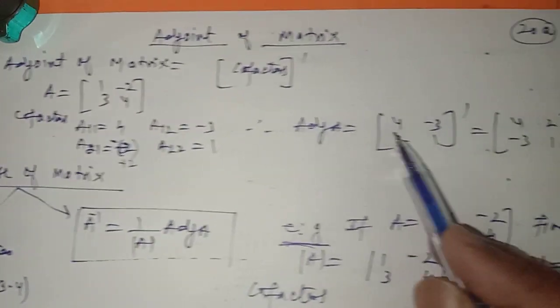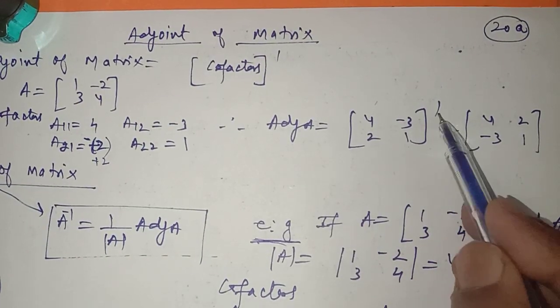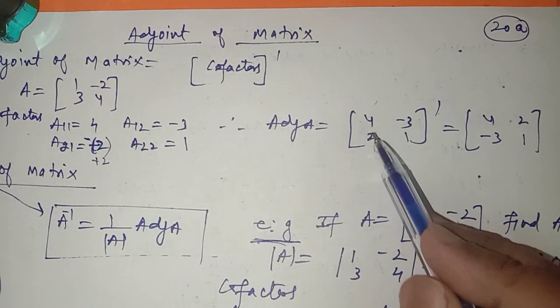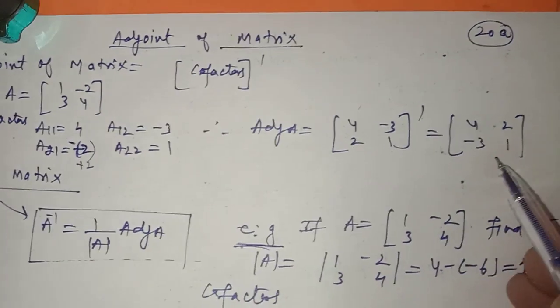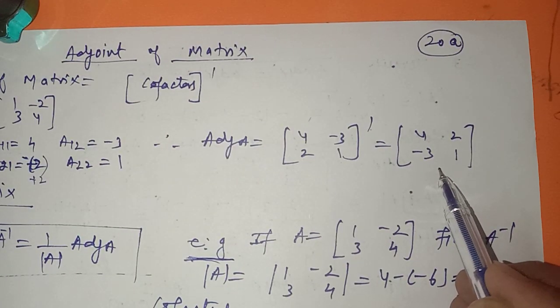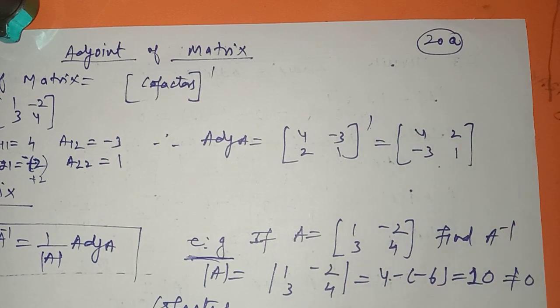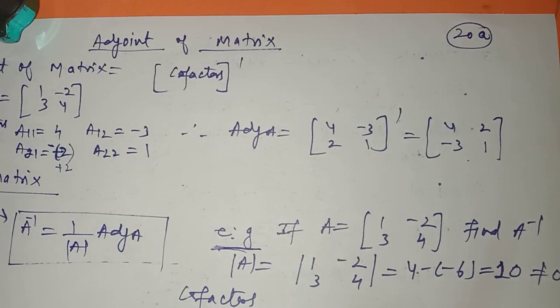The adjoint is the transpose of the cofactors matrix [4, -3; 2, 1], giving adjoint of matrix A as [4, 2; -3, 1]. Similarly you can do this for 3x3 determinants.